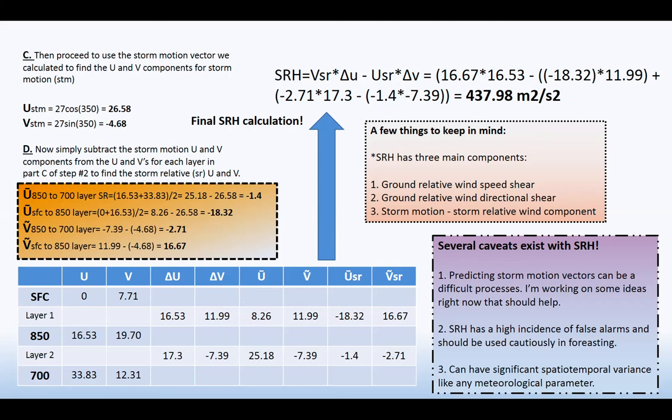But a few things to keep in mind now that we've gone through the rigor of the mathematics. Storm relative helicity has three main components. Okay. This is what you really need to know, other than obviously how to find the value. That's cool too, right? Ground relative wind speed shear. This is component one. Ground relative wind directional shear would be component two. And the storm motion is the third component of SRH. Okay. So those are the three components.